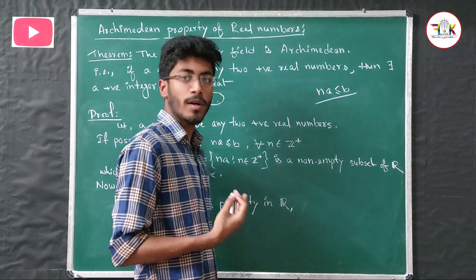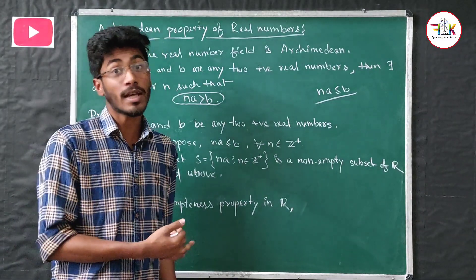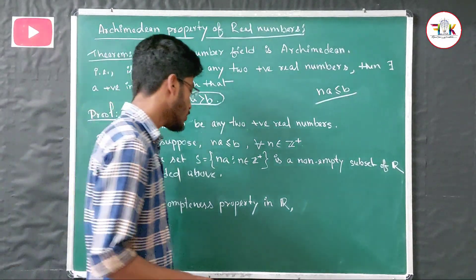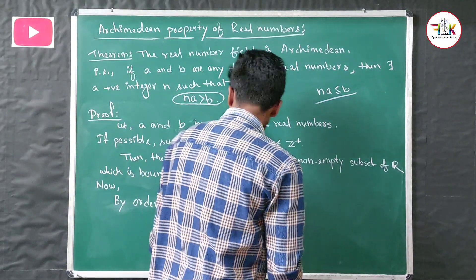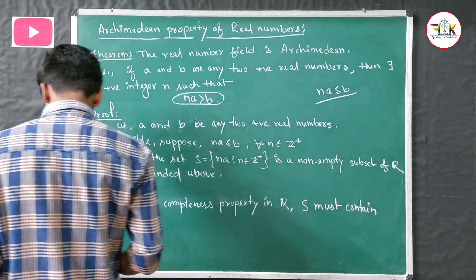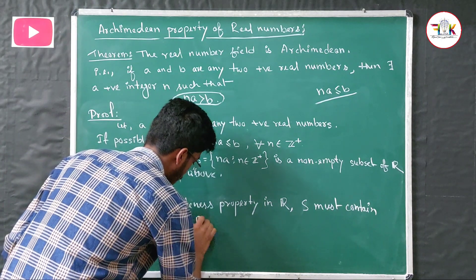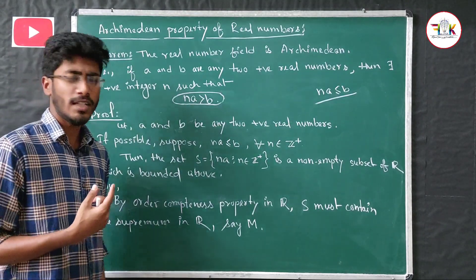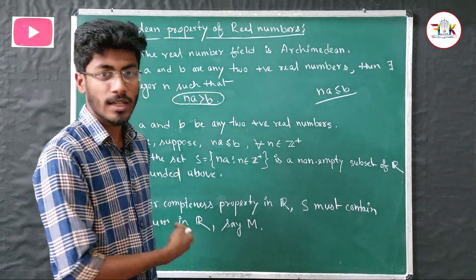Now, by the Order Completeness Property in R: since S is a non-empty subset of R which is bounded above, it must contain the supremum in R. So by the Order Completeness Property, S must contain the supremum in R. Let the supremum be capital M.